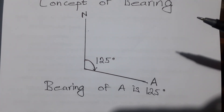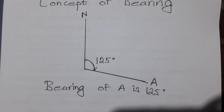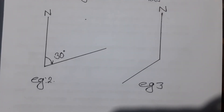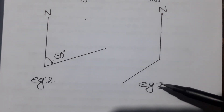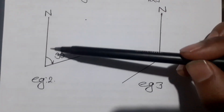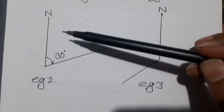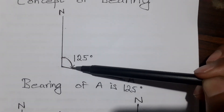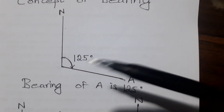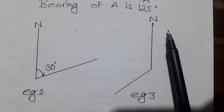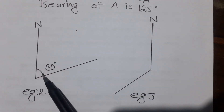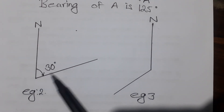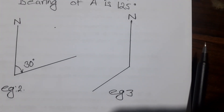Let's see what we've got. For example, in example 2 and example 3 — going through example 1 — the North line starts with point A. The end point gives a bearing. This is a bearing. The North line starts with A at the end, and we can measure the bearing.